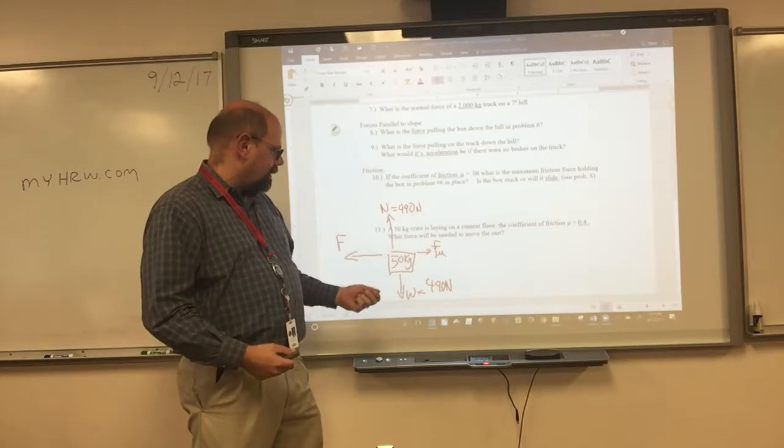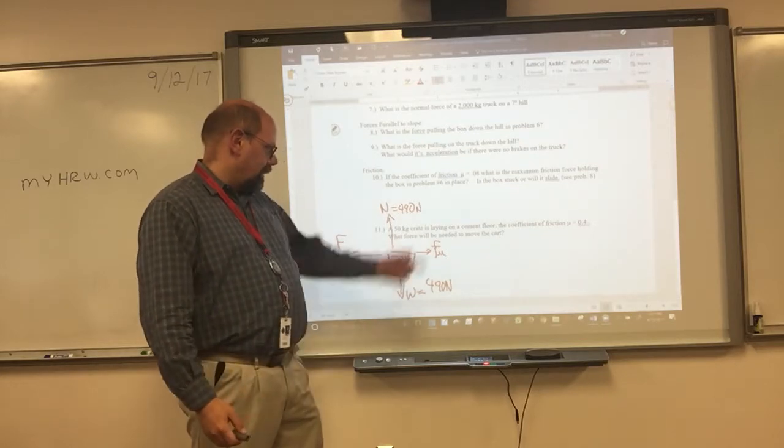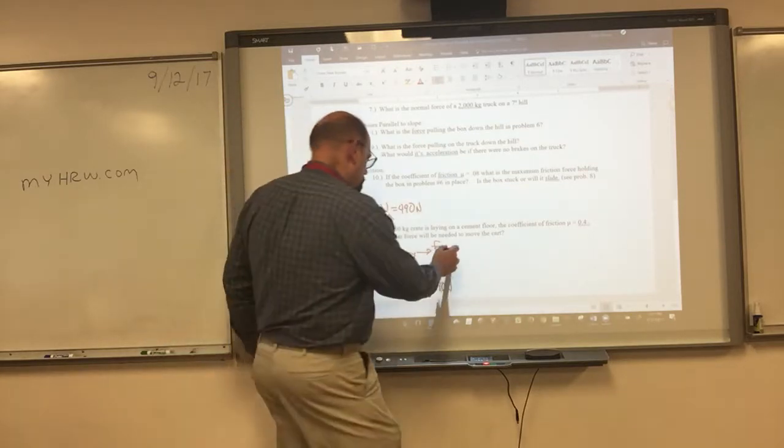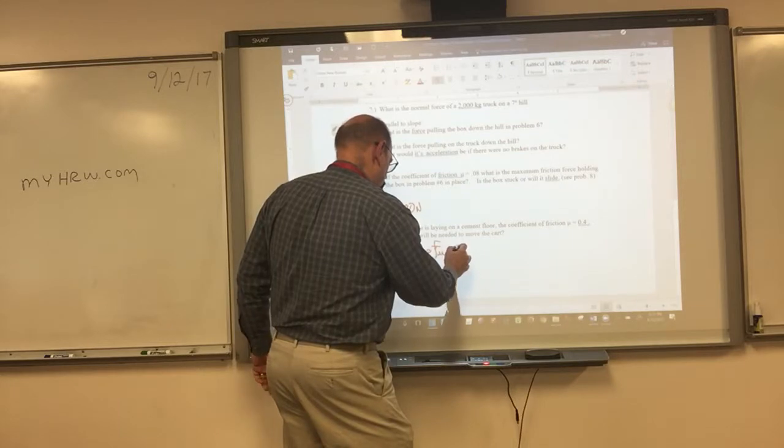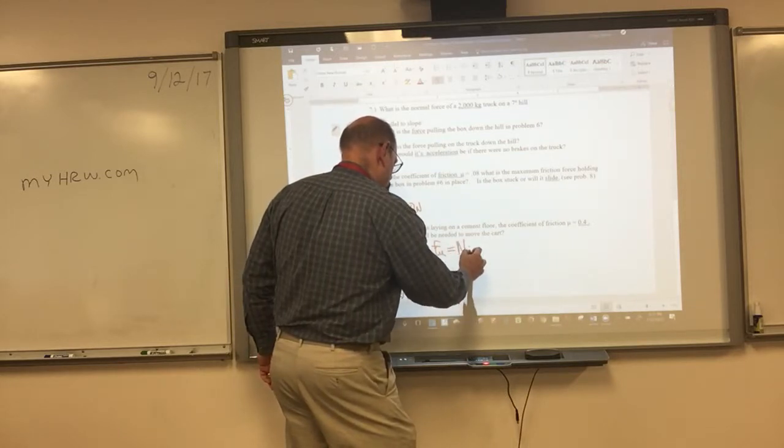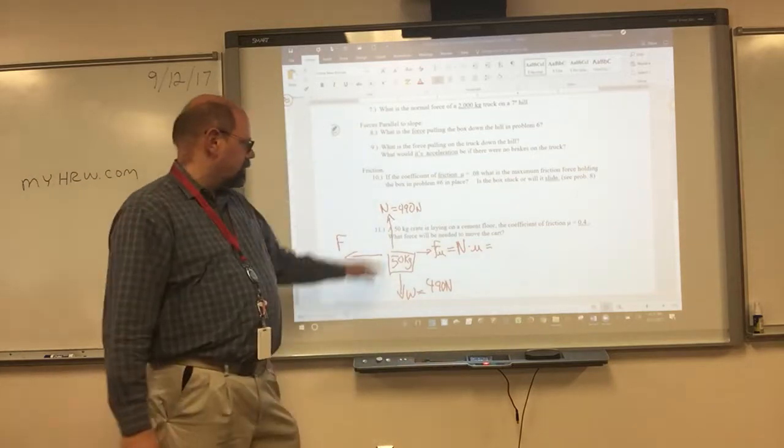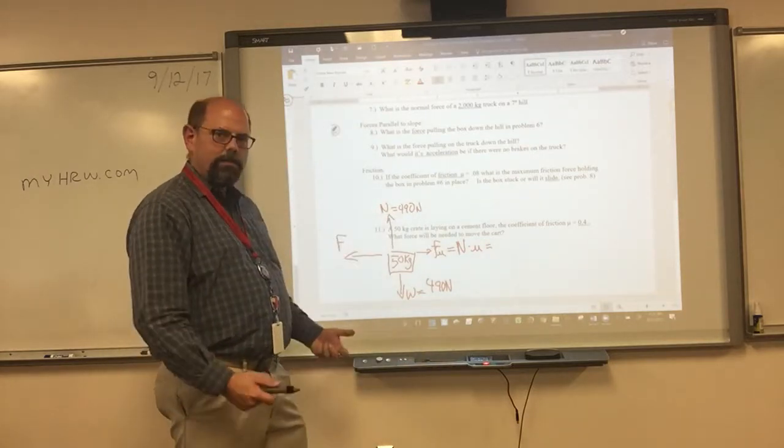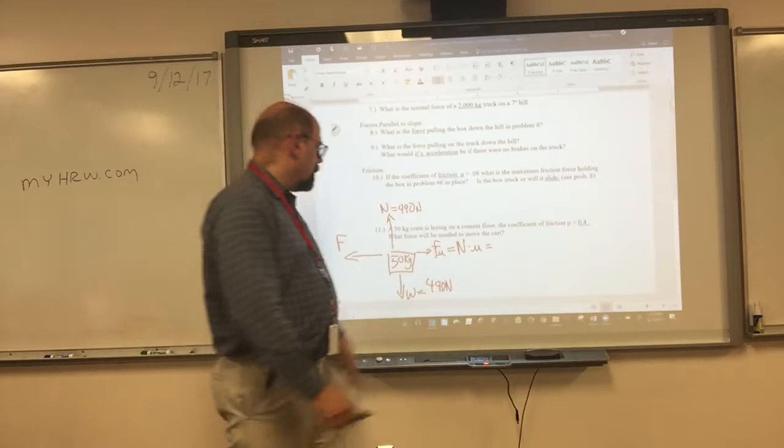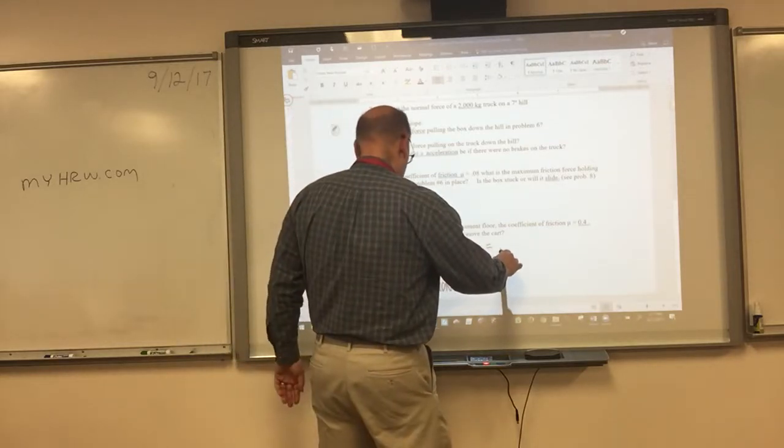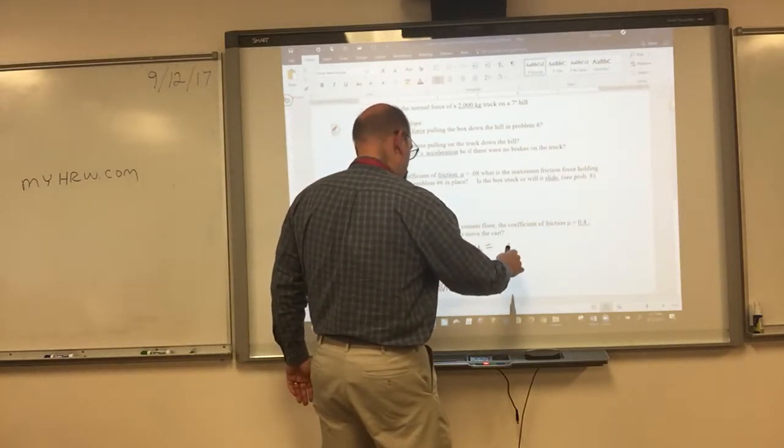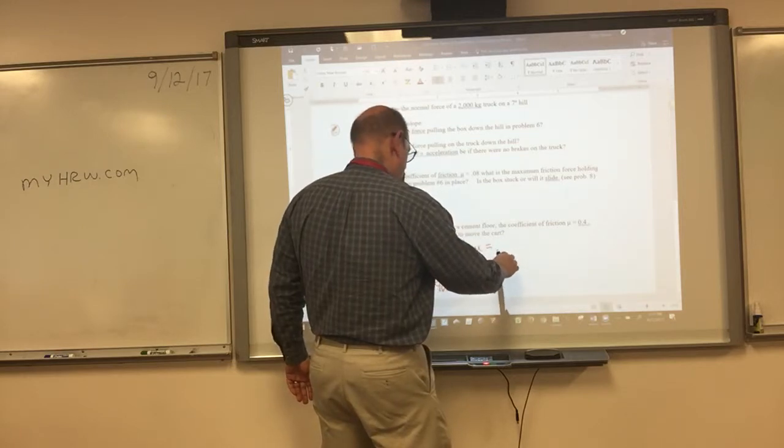So if I take 0.4, take the normal force times the coefficient of friction, that will tell me what the amount of friction is. So 490 is the weight it would take to lift this. 490 times 0.4. I'm not going to be able to do that in my head.